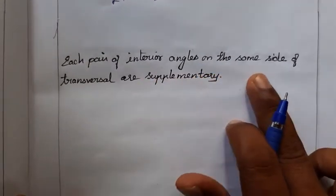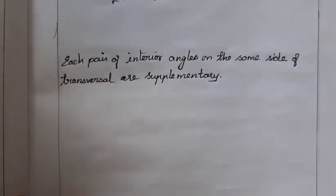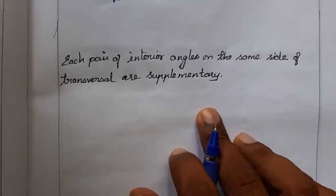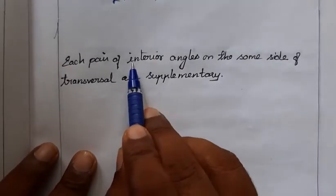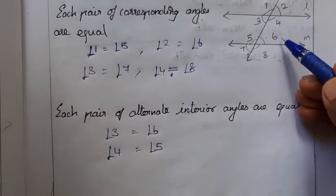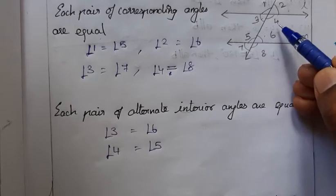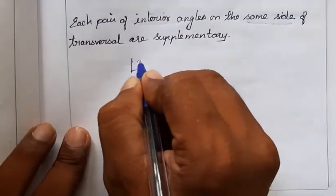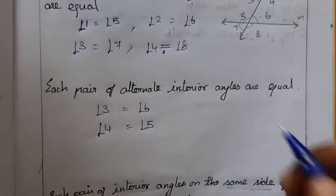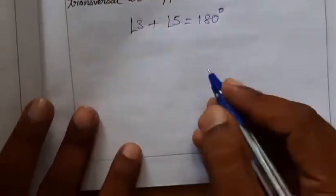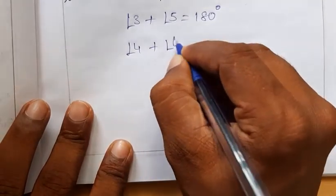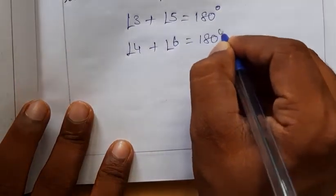Each pair of interior angles on the same side of the transversal are supplementary — they add up to 180 degrees. Interior angles on the same side: 3 and 5, so angle 3 plus angle 5 equals 180 degrees. Similarly, angle 4 plus angle 6 equals 180 degrees.